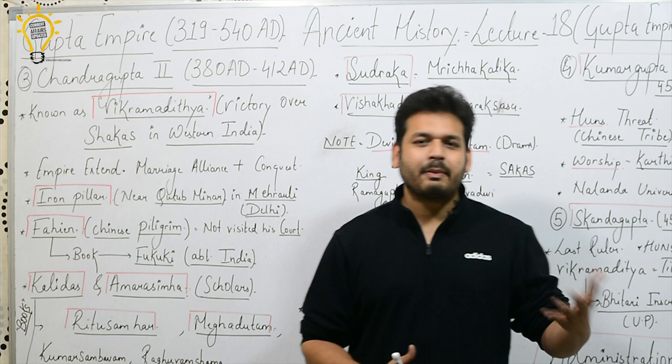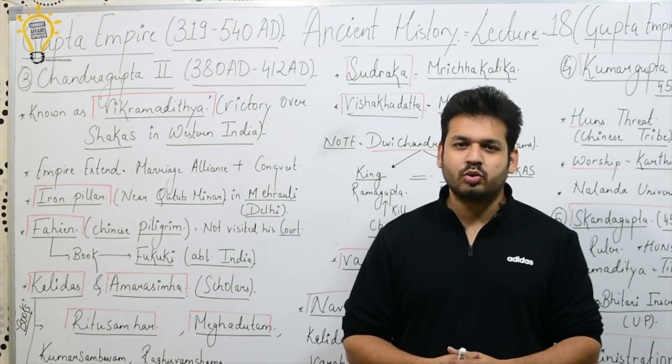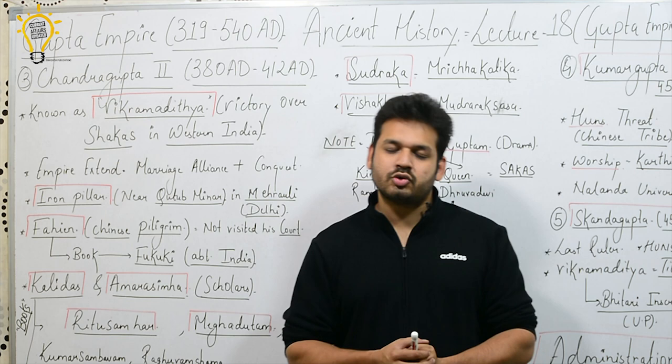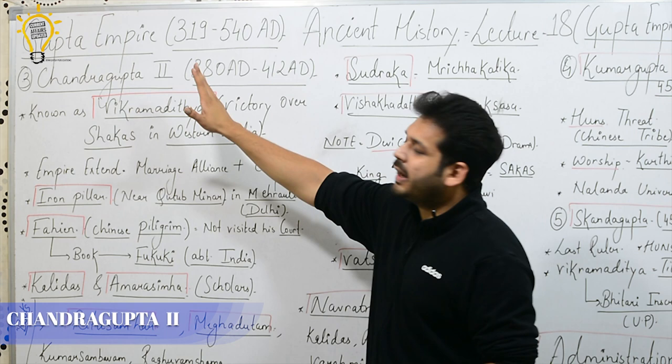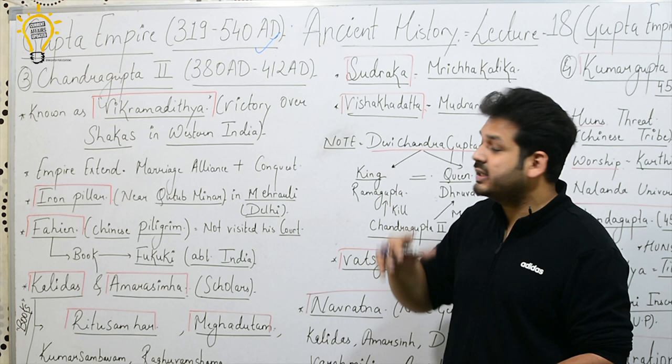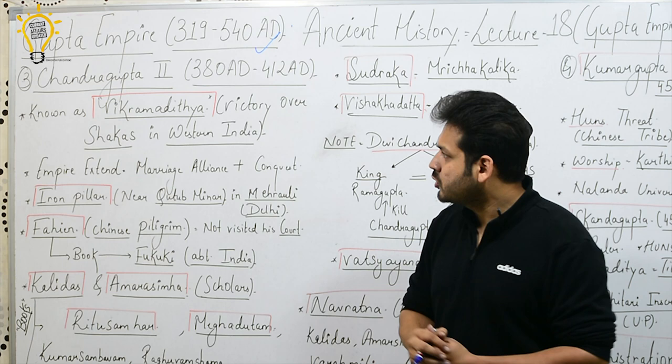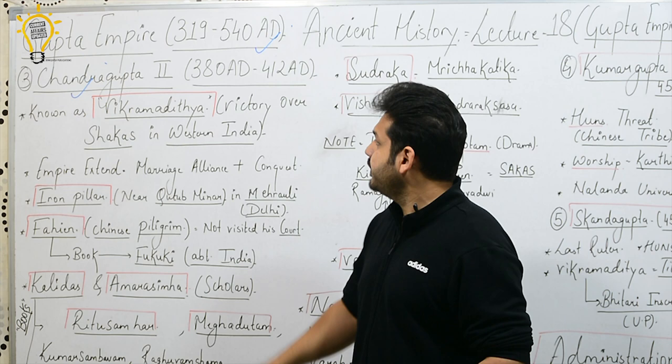The Gupta Empire we have already discussed. You will remember that Chandragupta I was discussed previously. Today, our discussion will be the third important ruler, that is Chandragupta II. You can see the heading: Gupta Empire 319–540 AD. Those who saw the last lecture, lecture number 17, should watch it first to better understand this lecture. The third ruler of the Gupta Empire is Chandragupta II, with a time period from 380 AD to 412 AD.